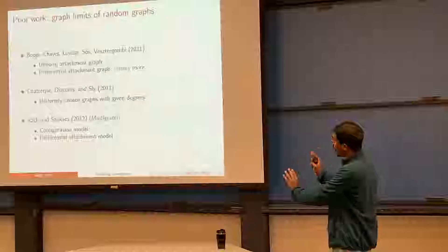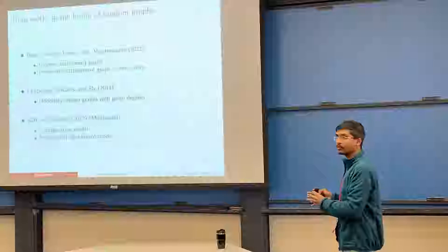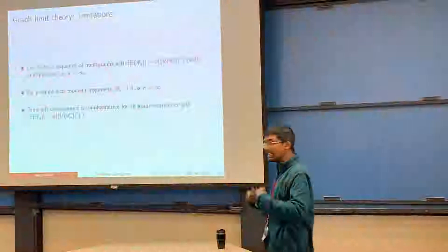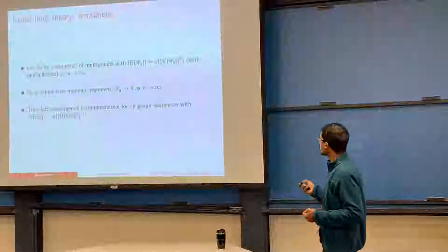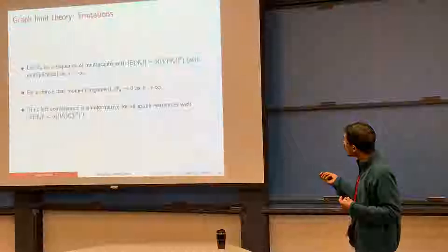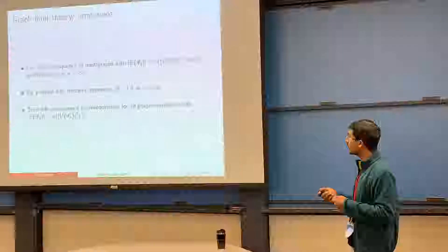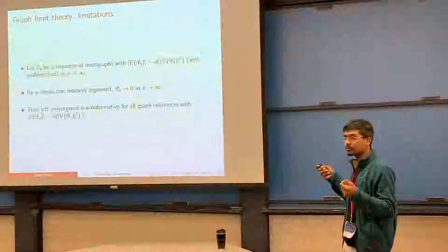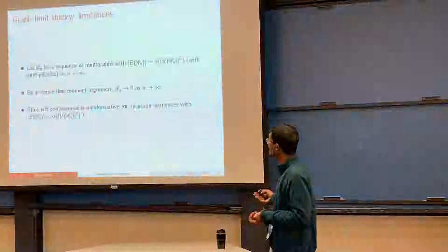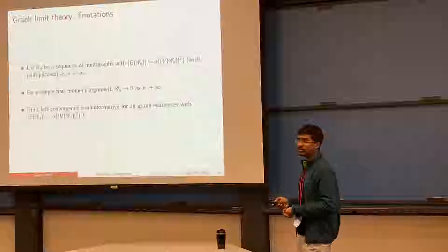The picture seems very nice, but there is one slight limitation: this notion yields non-trivial limits only for so-called dense graph sequences. For example, the complete graph on n vertices has order n-squared edges. Whenever you have a sequence of graphs where the number of edges grows as little-o of the square of the number of vertices, this procedure will give you the zero graph as your limit. So we do not really obtain an informative limit whenever we have a sequence of sparse graphs.